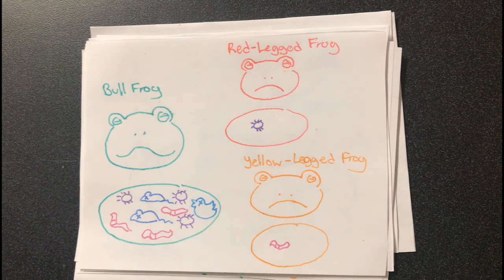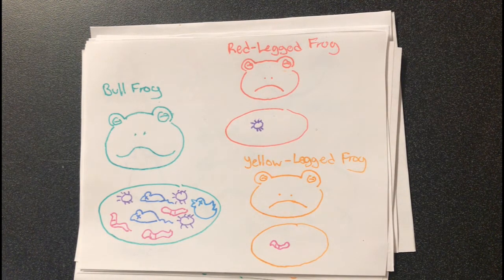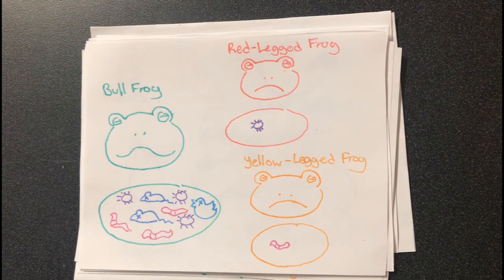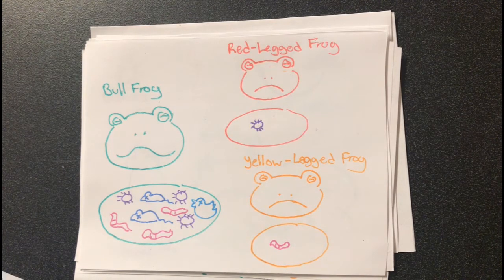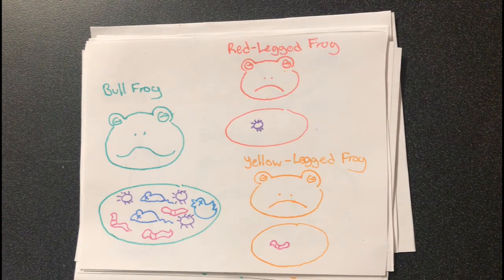An average bullfrog will eat a minimum of thirteen crickets a day or one mouse a week just to survive, making forty-seven to forty-five crickets or forty-eight mice in an entire year. This is just a single bullfrog. With a larger population, their environment turns into one huge bullfrog buffet, with the native species starving with nothing left to eat.